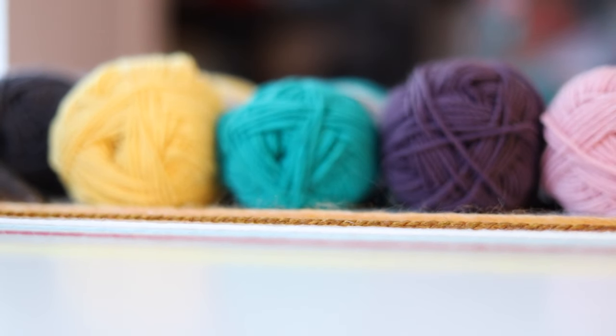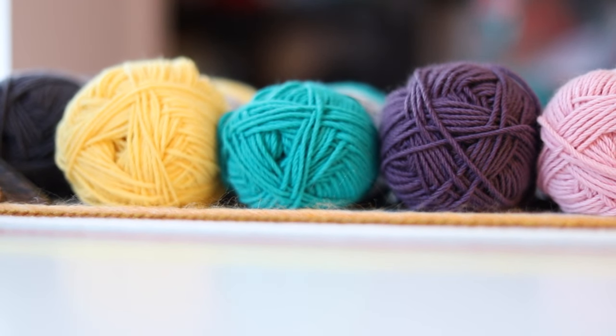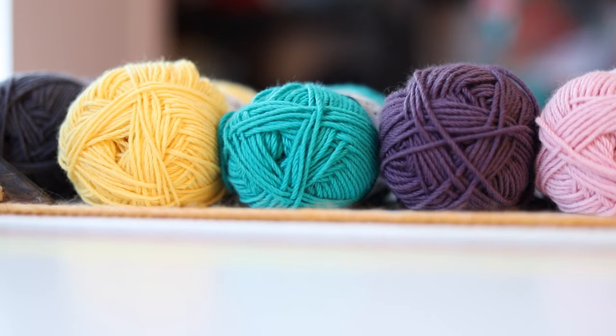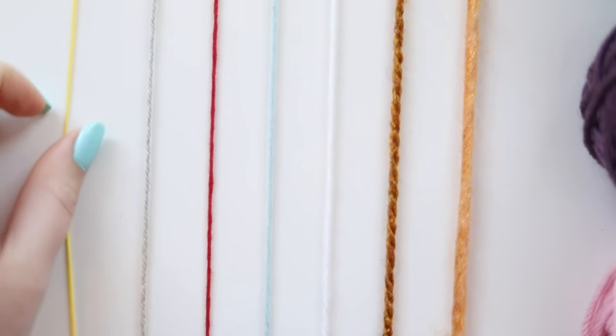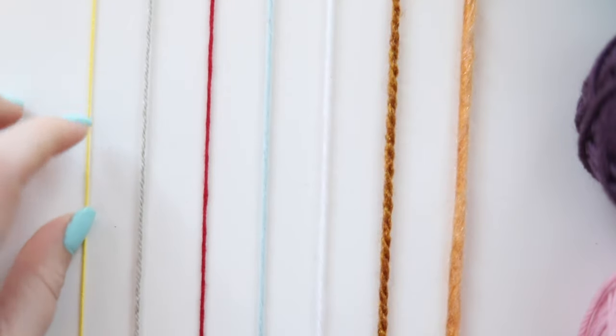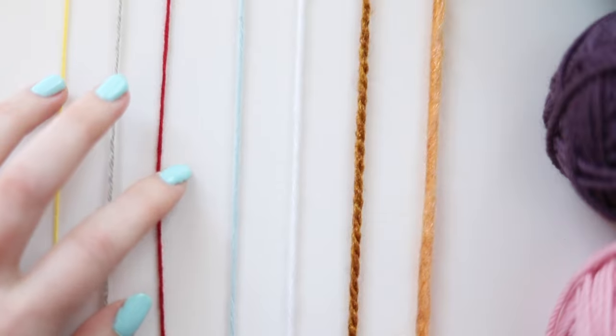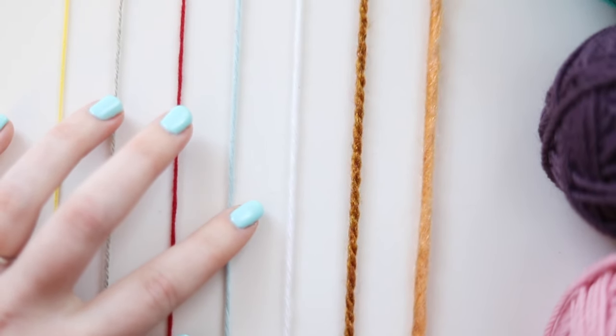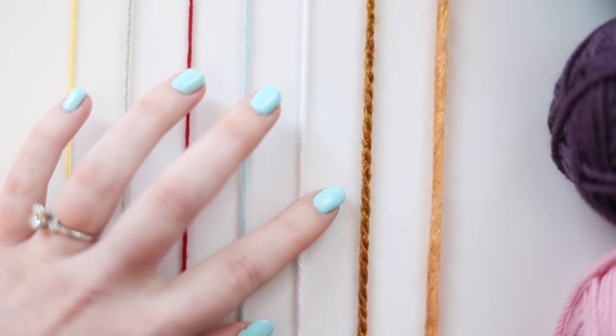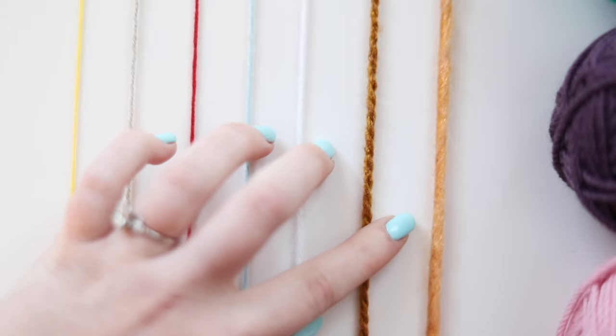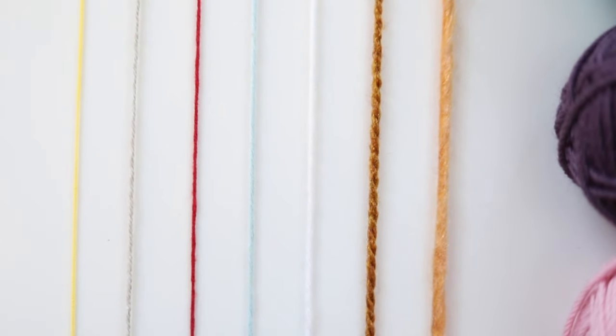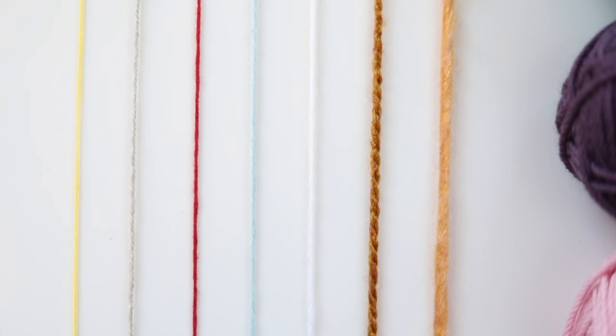Hello everyone. Today we're going to be learning all about yarn weights, what hooks to use with them, and what projects you can make with them. This knowledge is really going to help you when you're making projects in the future, so you know what combinations to use to get the proper gauge and drape that you want for your design. While yarn weights and hook sizes are a relatively straightforward concept, both yarn and hooks often go by more than one name or number, which can get a little confusing in the beginning. So we're just going to go over all of that so it doesn't get too confusing. So let's get started!